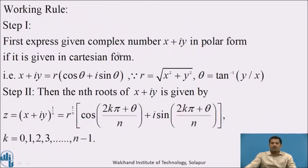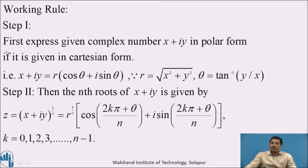Now the working rule: Step 1 — the complex number whose nth root we have to find out. If that complex number is given in polar form, then we directly go to step 2. If that complex number is given in Cartesian form, then we have to perform step 1, which is writing the given complex number in polar form.